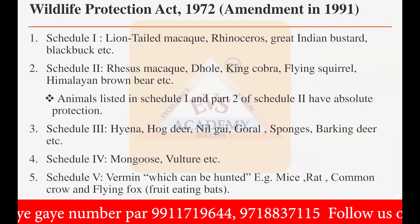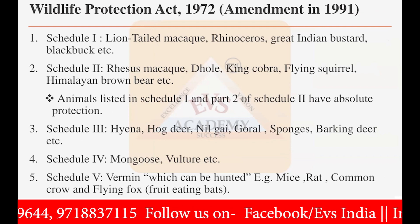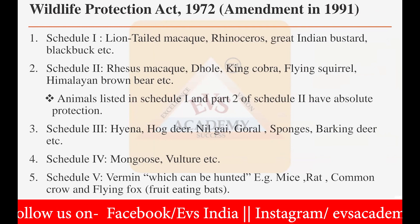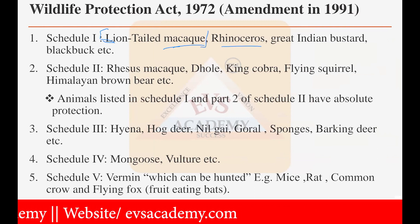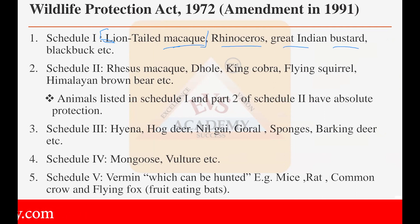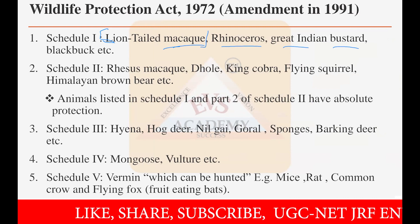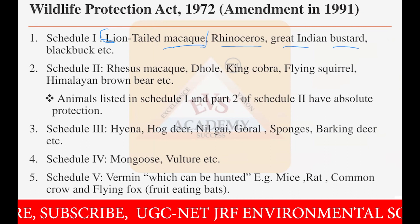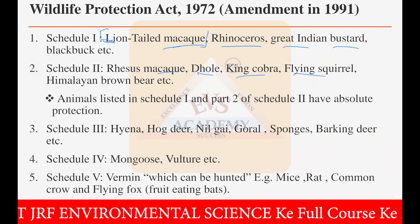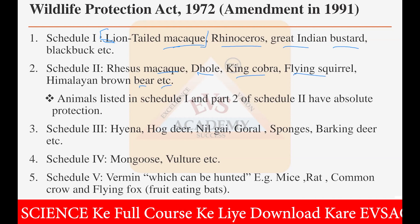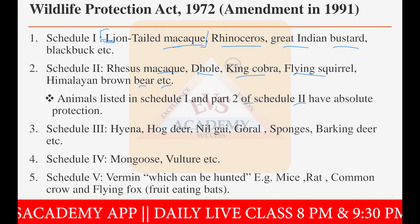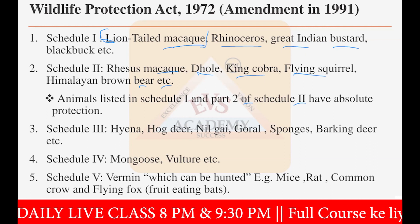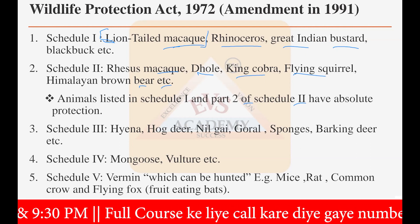Schedule one of the Wildlife Protection Act includes the lion-tailed macaque, rhinoceros, great Indian bustard, and black buck — these are extremely prohibited from hunting as they are endangered species. Schedule two includes the rhesus macaque, dhole, king cobra, flying squirrel, and Himalayan brown bear. Animals listed in schedule one and schedule two have absolute protection even for specimen or education purposes.